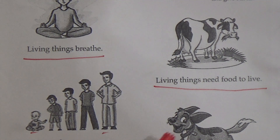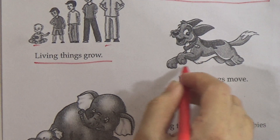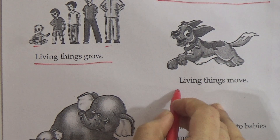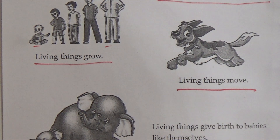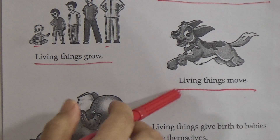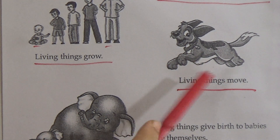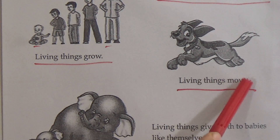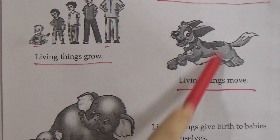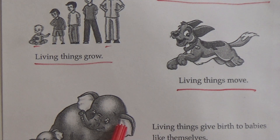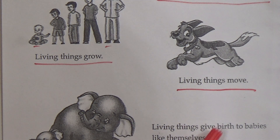Now see this figure. Living things move — there is a horse and the horse is running. That means living things move from one place to another. Underline this line and memorize it: living things move. All these are the characteristics of living things.